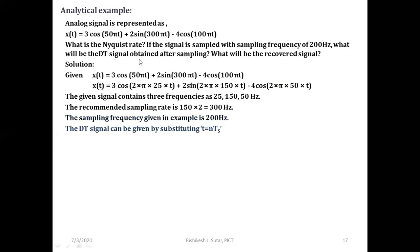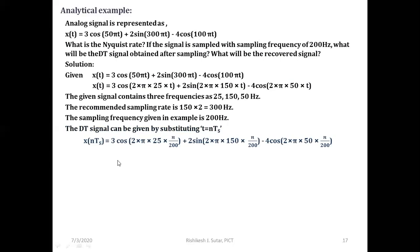Next, we find the discrete time signal obtained after sampling by substituting t = nTs, i.e., t = n/fs = n/200. So x(nTs) = 3cos(2π × 25 × n/200) + 2sin(2π × 150 × n/200) − 4cos(2π × 50 × n/200), replacing all small t with n/200.